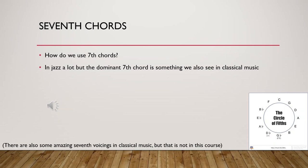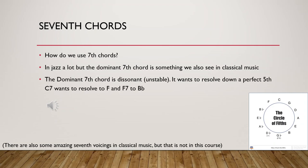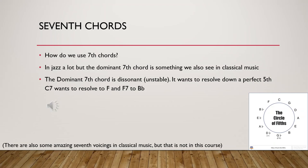How do we use 7th chords? In jazz a lot. But the dominant 7th chord is also something we can see in classical music. The dominant 7th chord is really dissonant and unstable — it wants to resolve down a perfect 5th. In the previous lesson we talked about the perfect cadence where the 5th chord wants to resolve to the 1 chord. If we make that 5 chord a dominant 7 chord, it wants to resolve even more — there is even more tension that wants to resolve back to the tonic. That is the V7 to I in Roman numeral analysis.